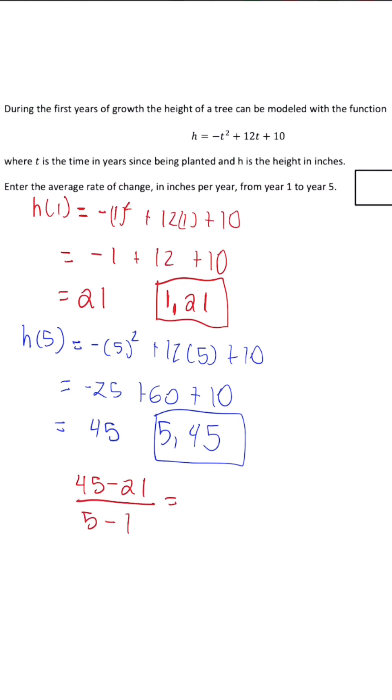Once we simplify this, we're going to get 24 over 4, which simplifies to 6. So our correct answer for the average rate of change from year 1 to 5 is going to be 6 inches per year.